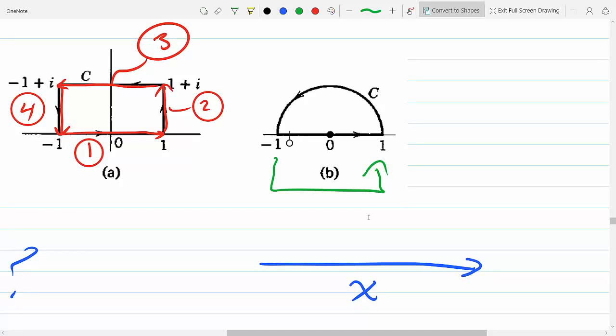For part B, you could go Cartesian from minus 1 to 1 and then polar, so there's two paths. This whole thing we could do polar and this we can do Cartesian.